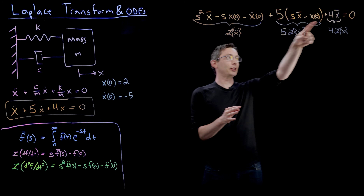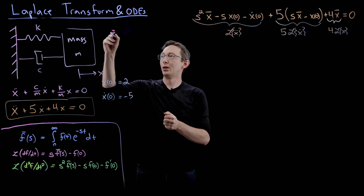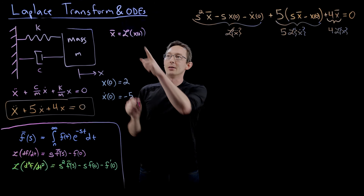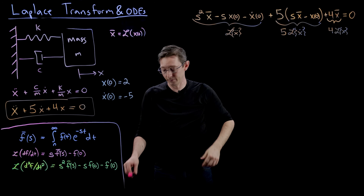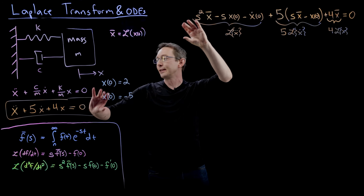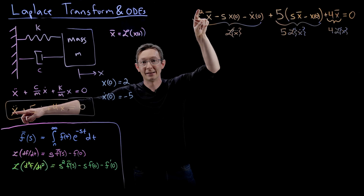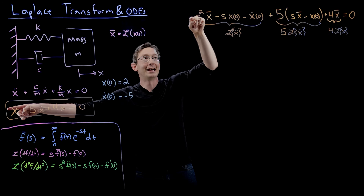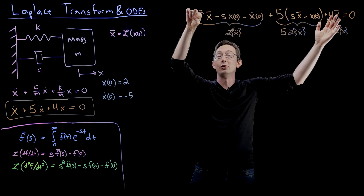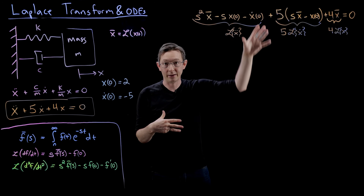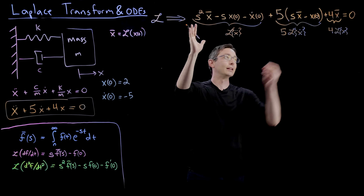This is super cool — notice that in this expression I have no more derivatives. All I have are X-bars, which is just the Laplace transform of my solution X(t), initial conditions, and polynomials in S. I've taken my differential equation and turned it into an algebraic equation, a polynomial in S. Every derivative turned into a polynomial in S, and if I had an X triple-dot or quadruple-dot, I would have S cubed or S to the fourth. Now let's solve this system using simplified Laplace transform notation.